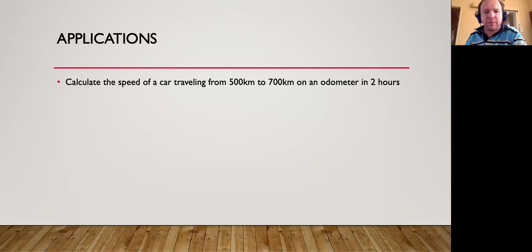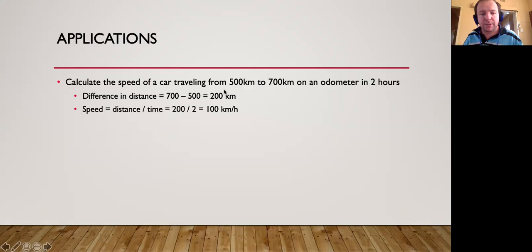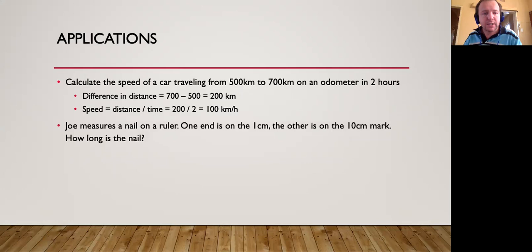Let's look at some applications. Calculate the speed of the car traveling from 500 to 700 kilometers on an odometer in two hours. You have to work out the difference in the distance and then divide by the two hours. So the difference is 700 minus 500 which equals 200. Now 200 kilometers divided by two hours will give the speed of 100 kilometers per hour.